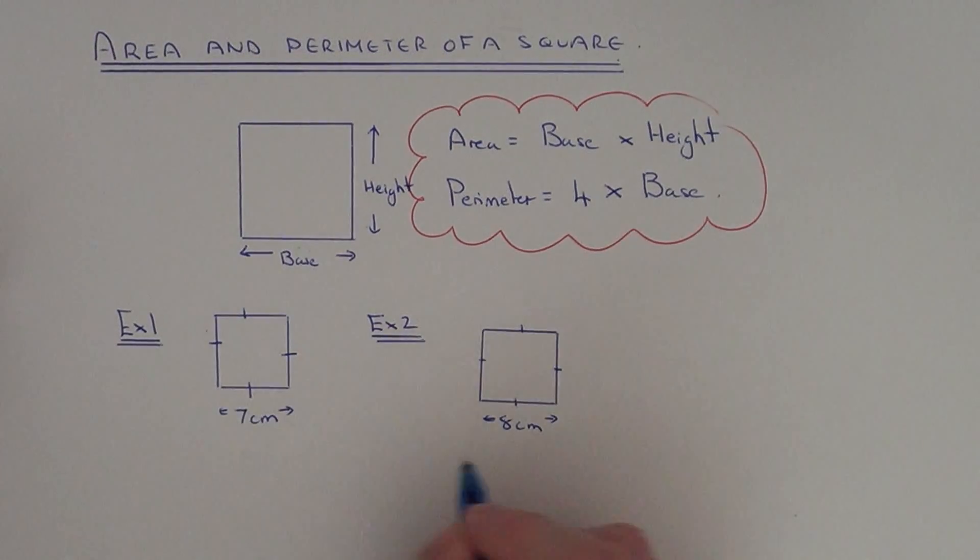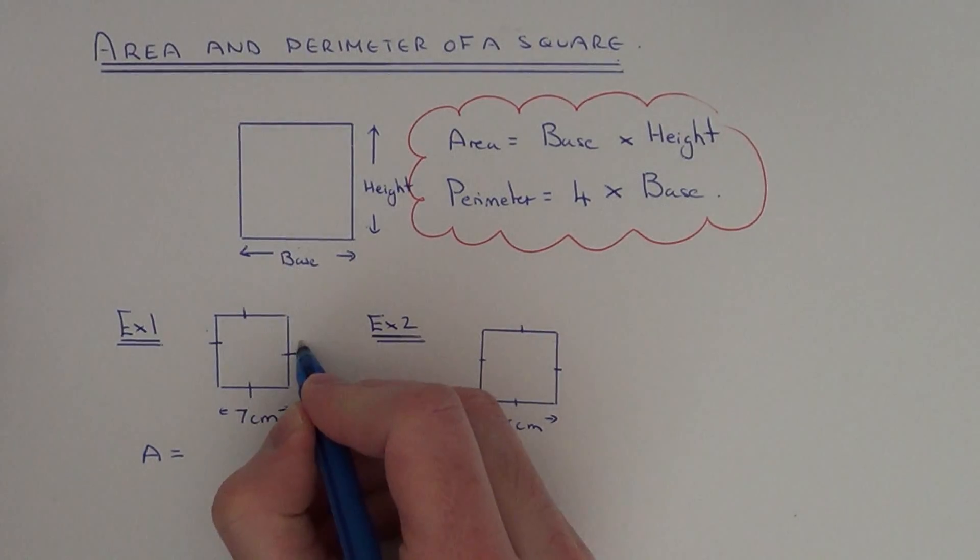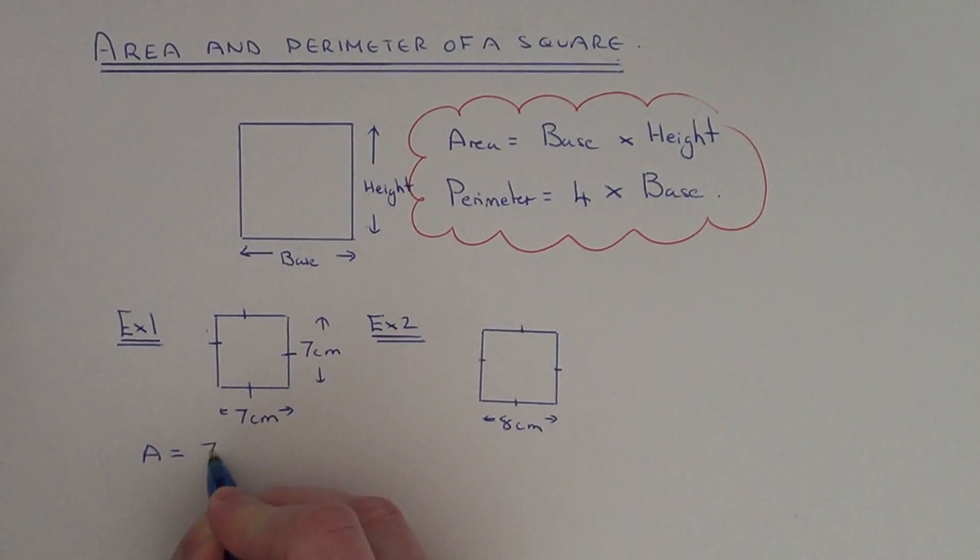So let's do the two examples. Example one, you've got a square of side length 7. So let's do the area first. All we've got to do is multiply the base by the height. So the height is also 7. So it would be 7 times 7, which is 49 centimeters squared.